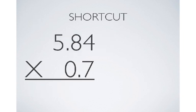Let's try that shortcut method again. In this case, I have 5.84 times 0.7. By multiplying the problem, I get 4088 as my temporary answer.